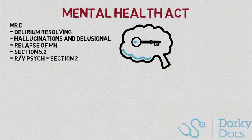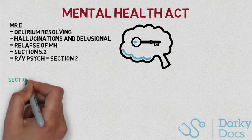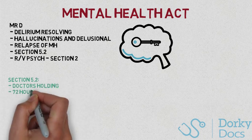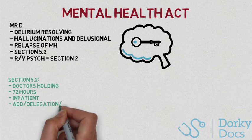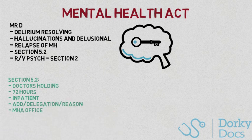Section 5.2 will allow him to have treatment for his mental health disorder, and ongoing physical treatment would require the Mental Capacity Act to be used were he to continue to refuse. A Section 5.2 is essentially a doctor's holding power, lasting 72 hours, and can be completed by any clinician caring for the patient. It requires all other restrictive measures to have been taken and can only occur in an inpatient setting. It requires a full address, the delegation of the person completing the form, and the reason why it's used, with notes filed in the patient's records and the Mental Health Act office informed. It buys time for a formal Mental Health Act assessment by a Section 12 qualified clinician, which allows a Section 2 or 3 to be subsequently completed if needed, and thus treatment of the mental health disorder initiated.